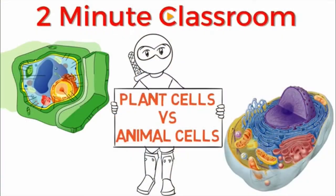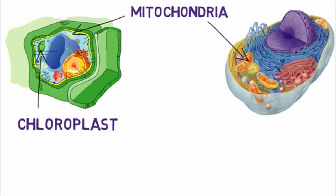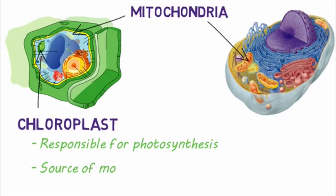Both plant and animal cells have mitochondria, but only plant cells have chloroplasts. This is the organelle responsible for photosynthesis, and of course animals don't perform photosynthesis. Most energy for life on the planet comes from the Sun through photosynthesis in the chloroplast.